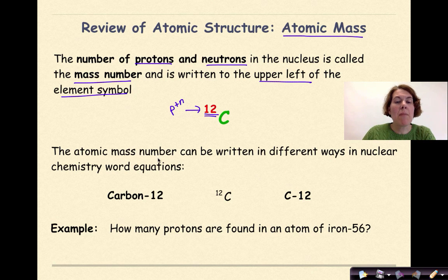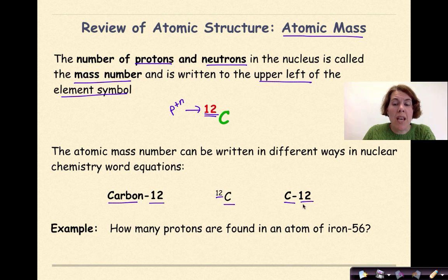The atomic mass number can be written in different ways in nuclear chemistry word equations, and you really need to be careful with this. So I could write it as the word carbon with a dash and 12. I could write it as the carbon symbol with the 12 in the upper left-hand corner, or I could write it with the symbol of carbon, a dash, and the 12 after. The important thing to remember is that this is representing the atomic mass.